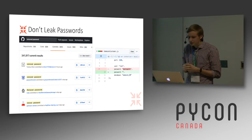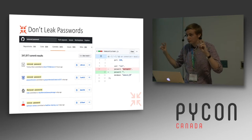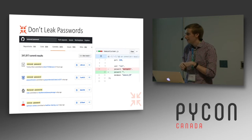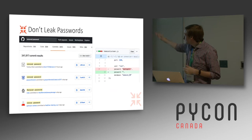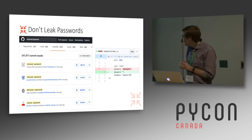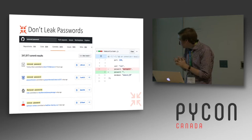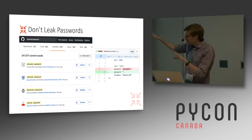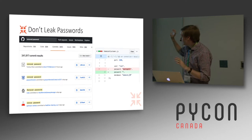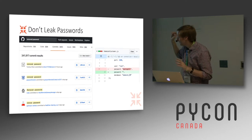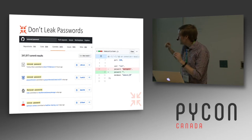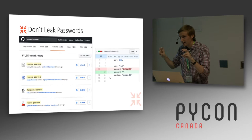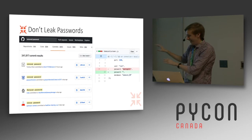If you go to GitHub and do a quick search for commits called 'removed password', you'll get over 340,000 results. This is a specific example — some guy with an Amazon database removed his password; hopefully he also changed it. And just to keep in mind, 340,000 sounds like a lot, but that's actually only the number of people who had the audacity to name their commit 'removed password', so there are a lot more that aren't even named that.